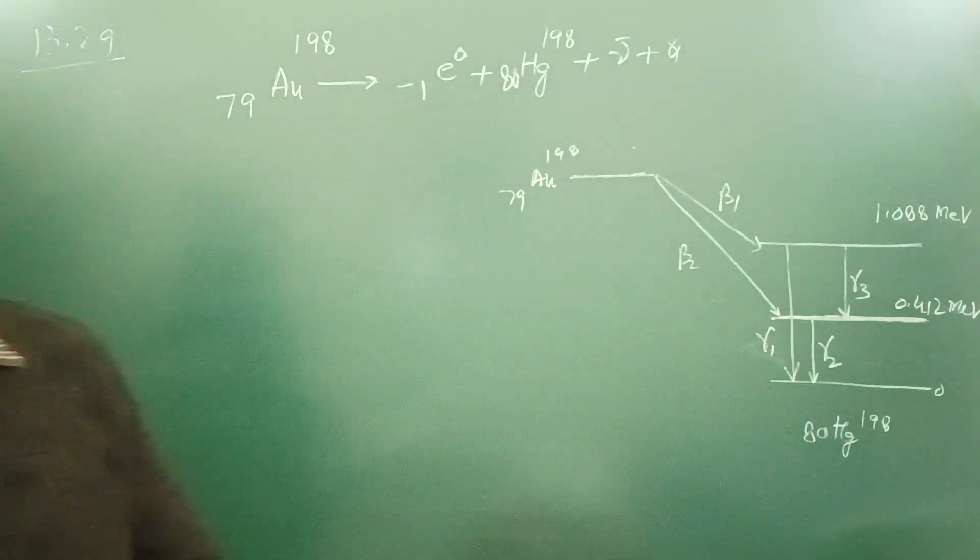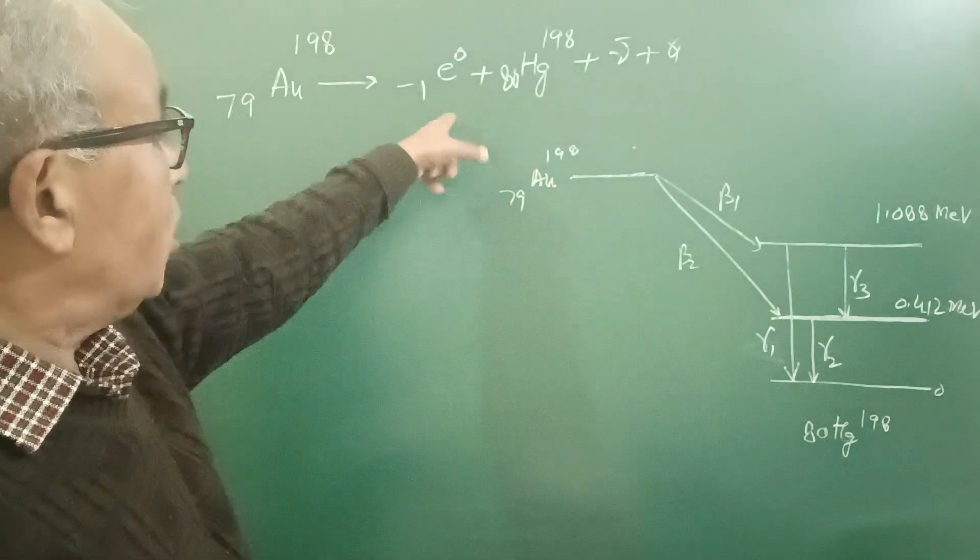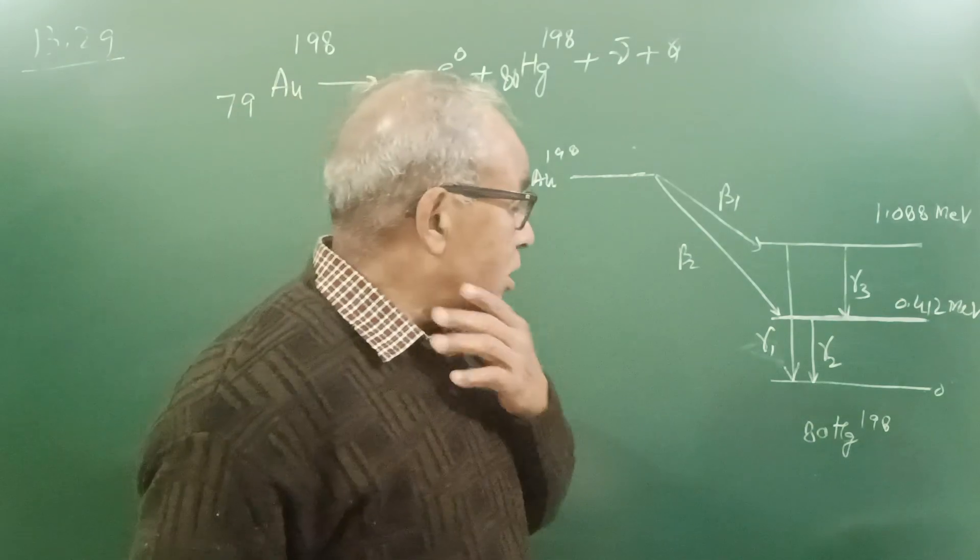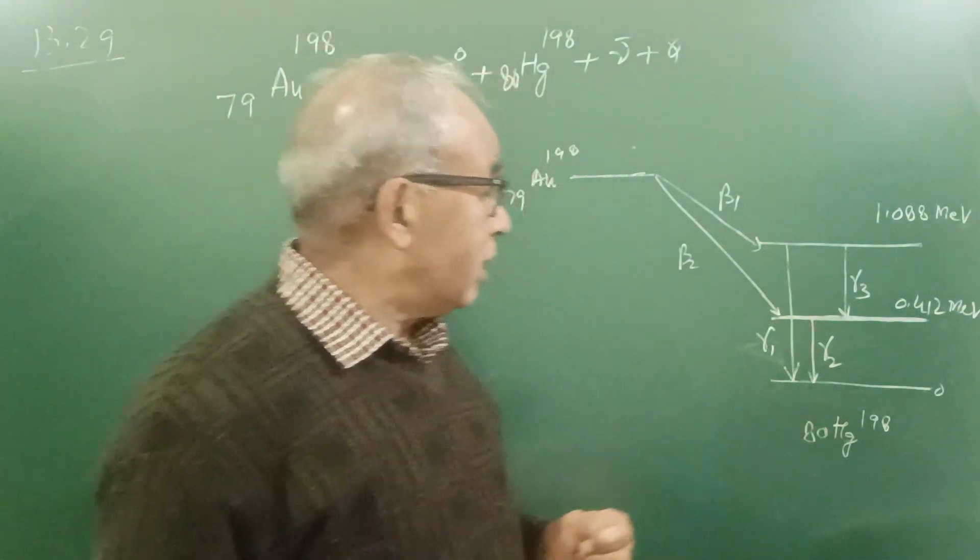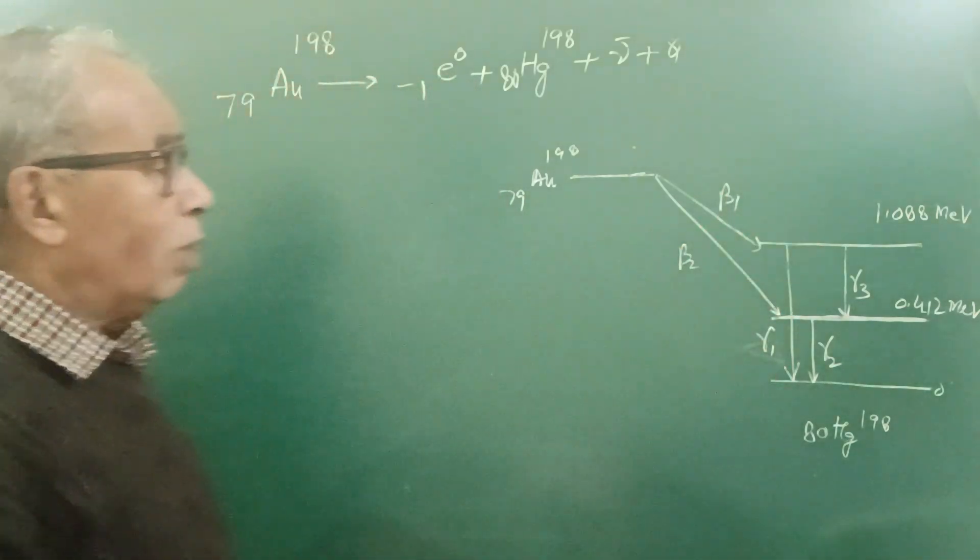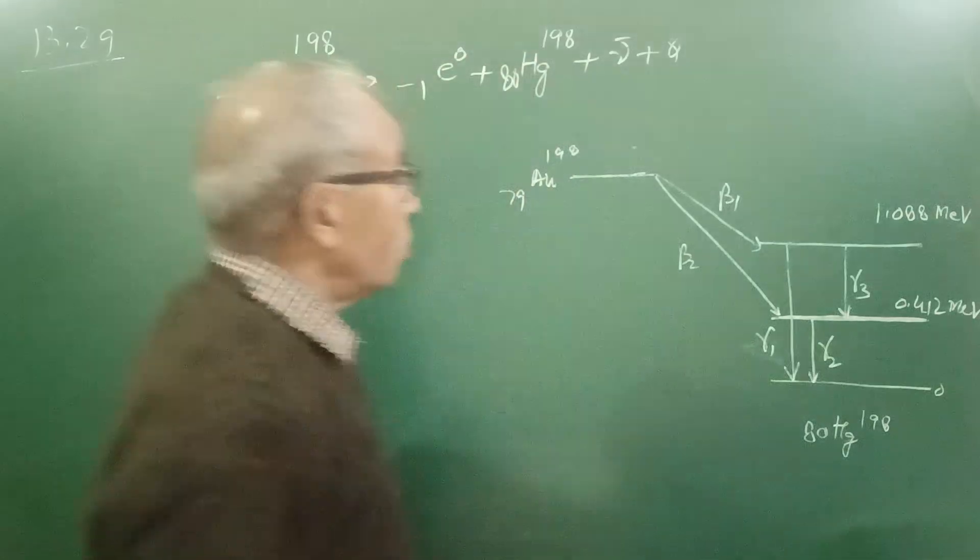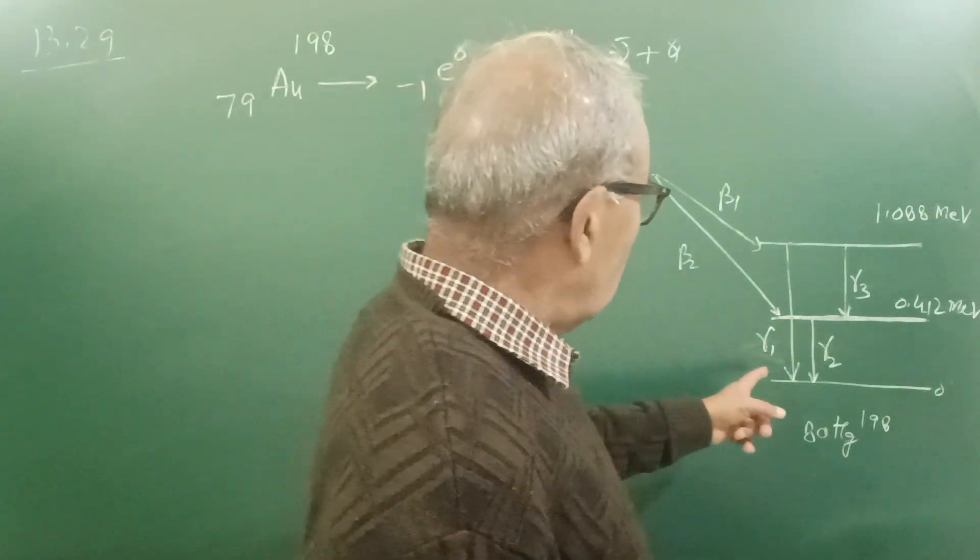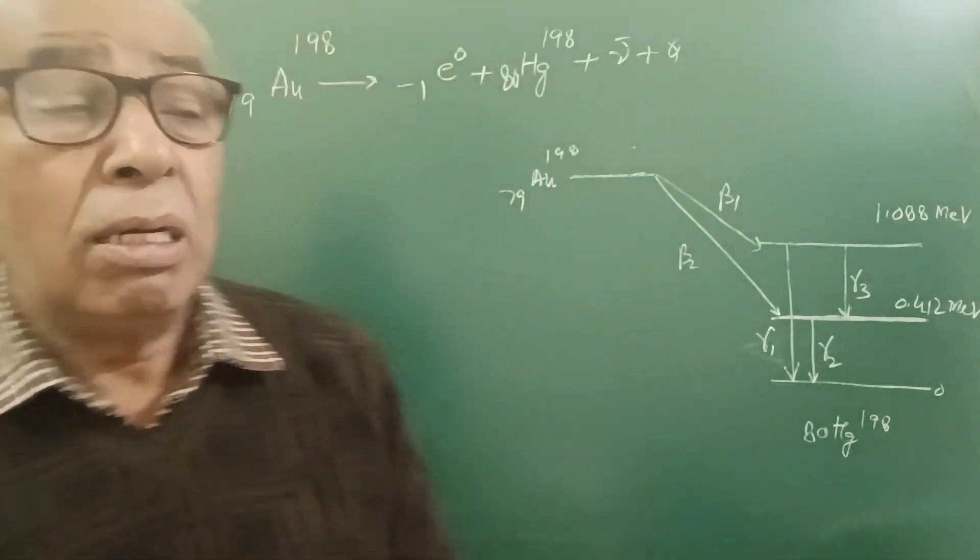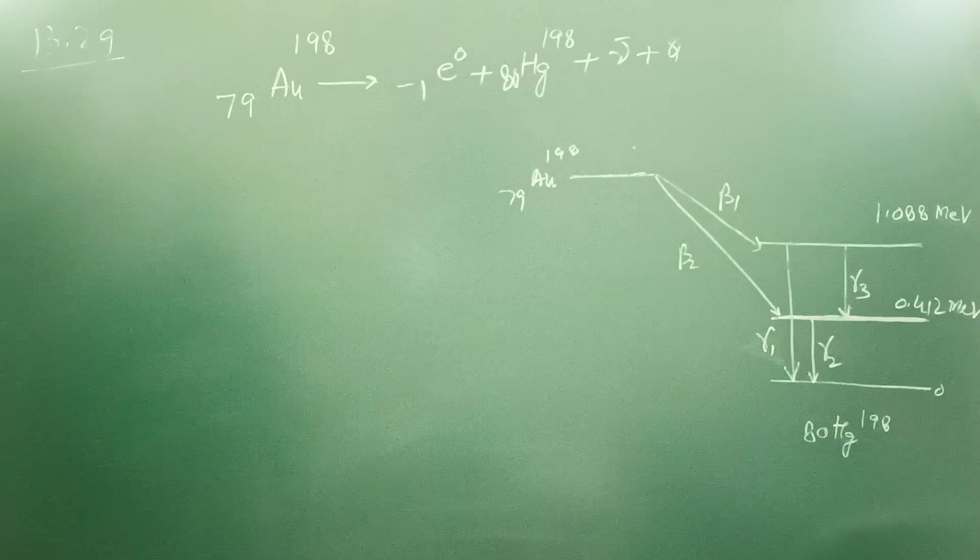I have told you many times that during beta decay or alpha decay, the nucleus is left in an excited state. These are two excited states, and the excited nucleus tries to go to ground state by emitting extra energy directly or in subsequent transitions. It goes directly from this to this and then this to this. You are also asked about the frequency, so we have to calculate mass defect.